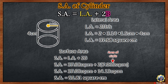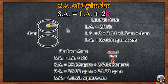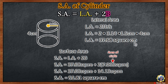Next example: Find the surface area of the cylinder. Use pi equals 3.14. First, find the lateral area. The formula is 2πrh. The 2πr is the circumference of the base circle. So 2 times 3.14 times radius 1.5 centimeters times the height 4, equals 37.68 square centimeters for the lateral area.